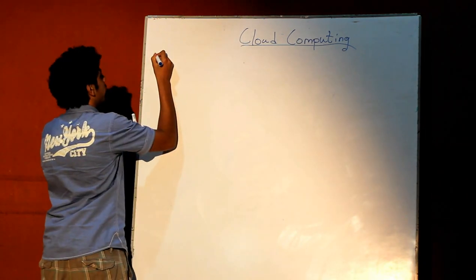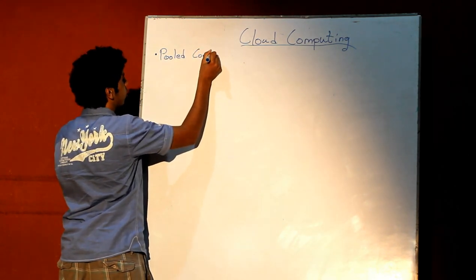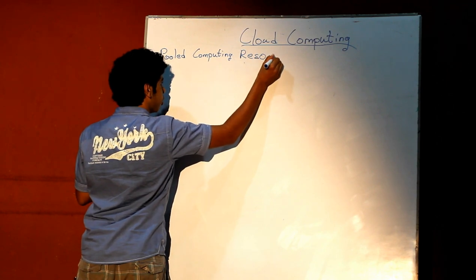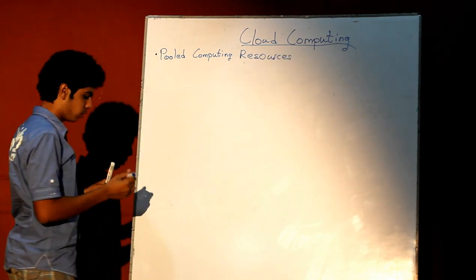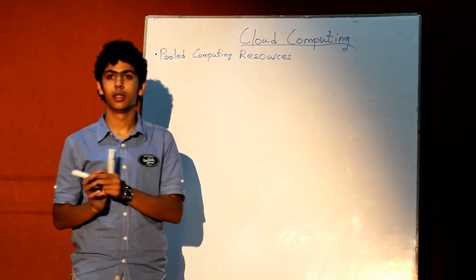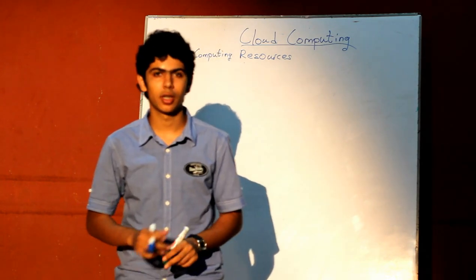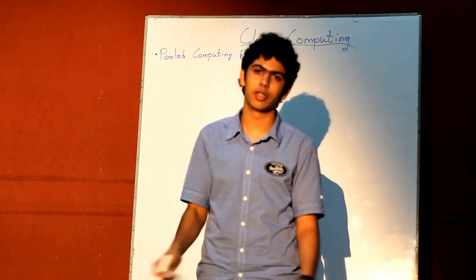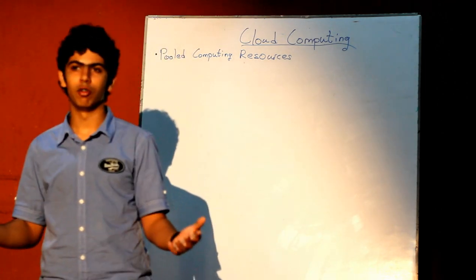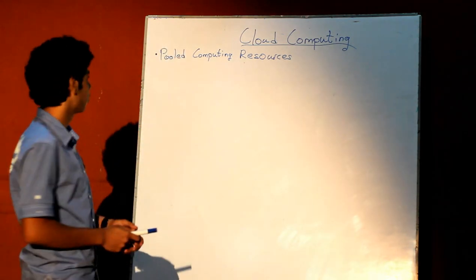The first one is called pooled computing resources. What pooled computing resources means is that if I'm a cloud service provider and you are a customer who wants to contract some of my services, you do not really know at any point in time how big my infrastructure is. It's more like you know I have this big pot of capacity and servers and resources, and you want to access some of them, and you pay me for such access.